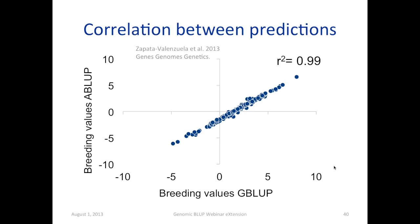This scatter plot shows the correlations between predictions from A-BLUP and genomic BLUP in a scenario where we did not remove any phenotype from individuals — just using the genomic relationship matrix instead of pedigrees to see what kind of correlation we get. It's almost perfect correlation.